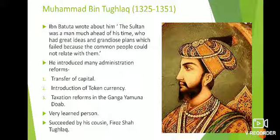Another reform was the taxation reform in the Ganga-Yamuna Doab region. He raised taxes there up to 50%, but this was done during a time when the region was facing famine conditions. With no production, the farmers were unable to pay the taxes, and this reform also failed. All of Muhammad bin Tughluq's major reforms ended in failure.